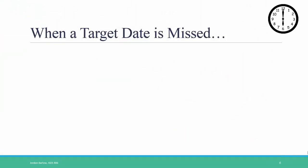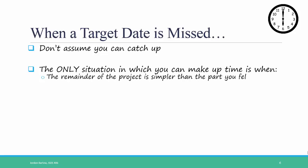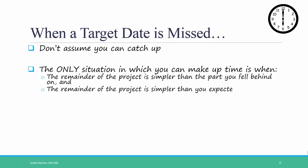If the project is underway and you found that a target date has been missed, don't assume you can catch up. The only situation in which you can make up time is when the following criteria are met: the remainder of the project is simpler than the part you fell behind on, and the remainder of the project is simpler than you expected when the original estimates were made. If the rest of the project is as complex as the part that you're behind on, you should adjust estimates for all of the scheduled dates by the percentage that your estimate was off for the current phase.